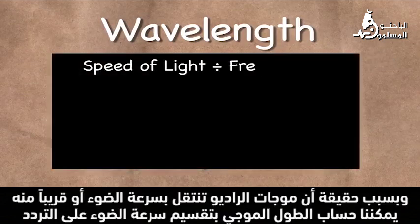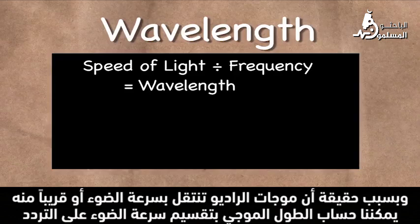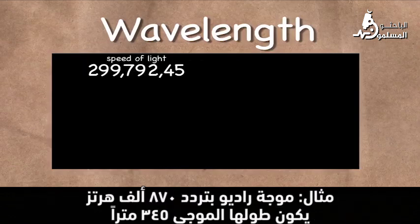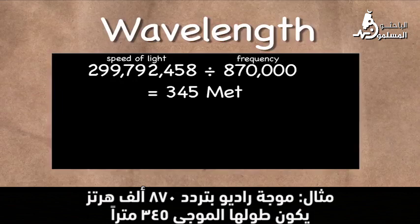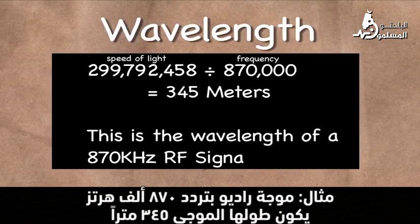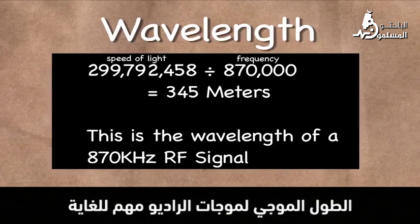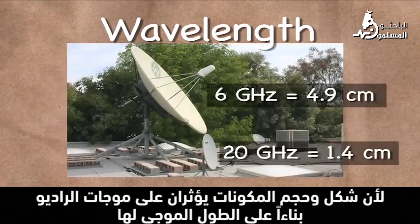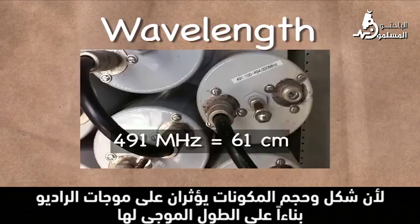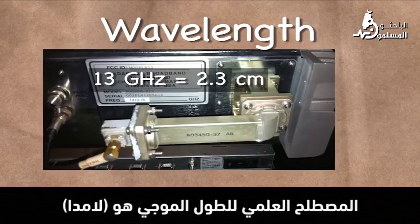Due to the fact that RF travels at the speed of light, or very close to it, the wavelength of a radio wave can be determined by dividing the speed of light by the frequency. As an example, an RF signal with a frequency of 870,000 Hz has a wavelength of 345 m. The wavelength of an RF signal is very important, as the physical shape and size of components used affect the RF signal based on its wavelength. The scientific term for wavelength is lambda.